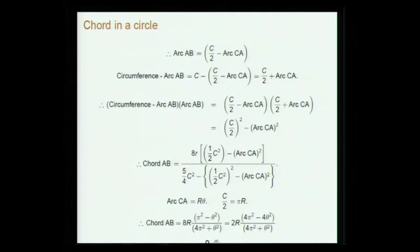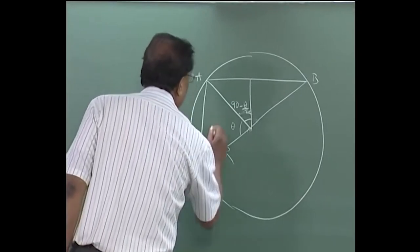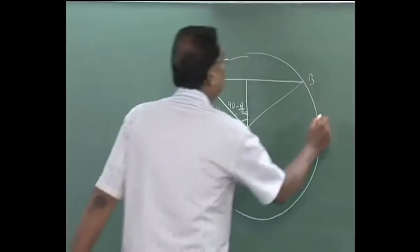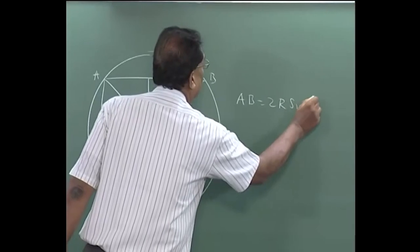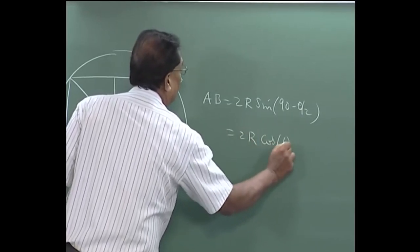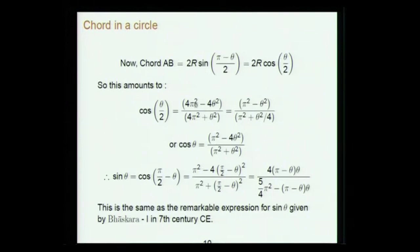What Bhaskar states is chord AB in this form, whereas what we get in modern notation is: chord AB = 2R·sin(90 − θ/2) = 2R·cos(θ/2). The formula as given is (4π² − 4θ²) / (4π² + θ²), so cos(θ/2) = (π² − θ²) / (π² + θ²/4).